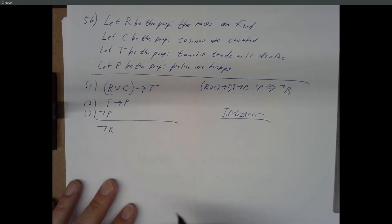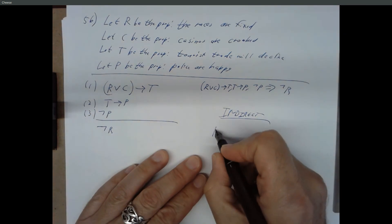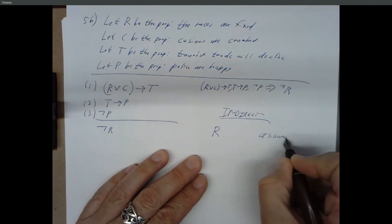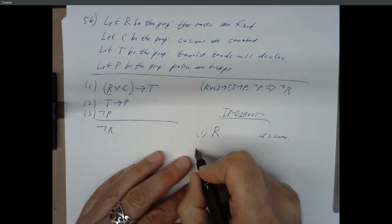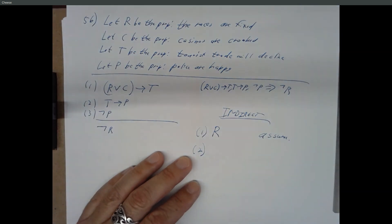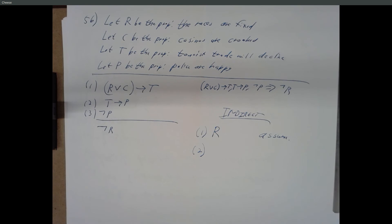Negate the thing we're trying to show. Right? So, we're trying to show not R. So, let's assume R. And if we assume R is true, what can we say without, forget about the formalities for a second. Can you see a pretty quick path to a contradiction if we start off by saying R is true? The police, from two and three, because if R is true, then we assume the trade will decline. If the trade will decline or the tourists will decline, then the police are happy. But police are not happy.